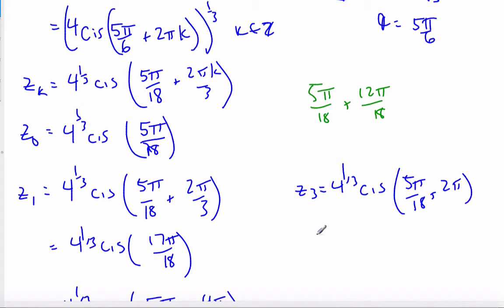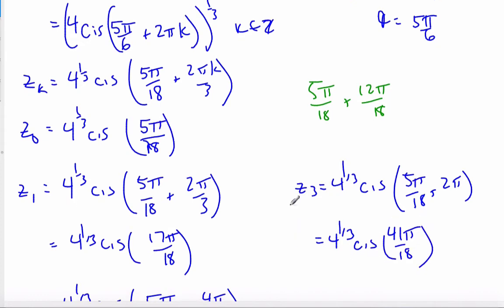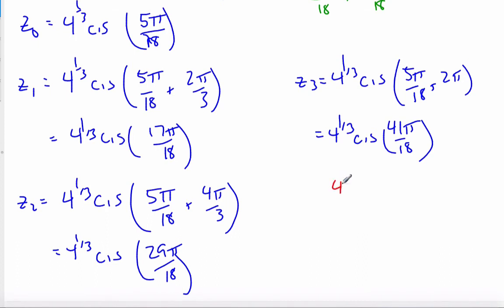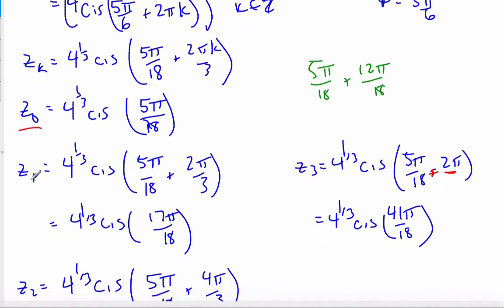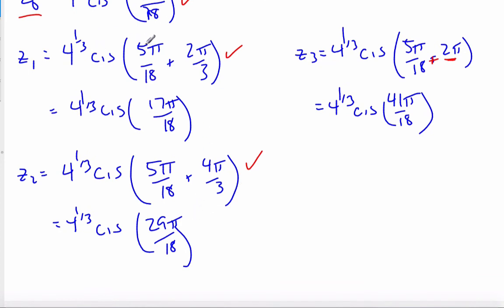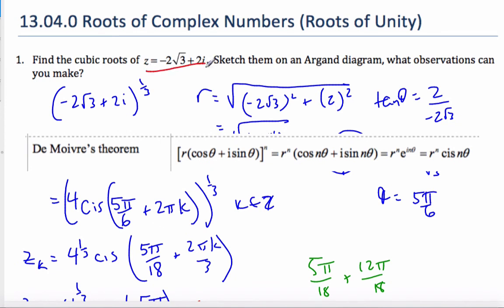And when I do this calculation, that's 4^(1/3) cis(41π/18). But what I can recognize is that 5π/18 + 2π means I'm back in the same position as I was for z_0. It's the same position as 5π/18. So I don't have to find z_3. z_4 would be the same as z_1, z_5 the same as z_2, and so on. It gets cyclical. So I only need to do z_0, z_1, and z_2, and those will be my cube roots of this particular complex number, -2√3 + 2i.